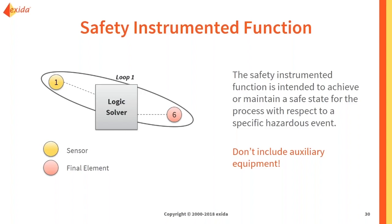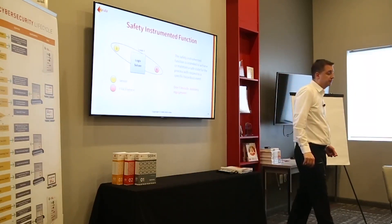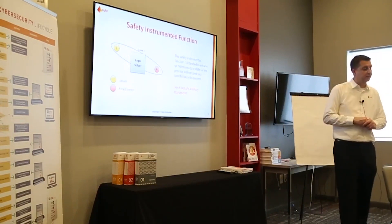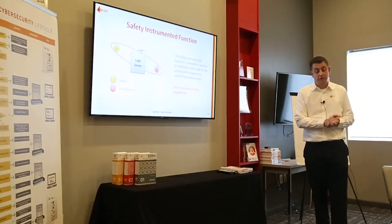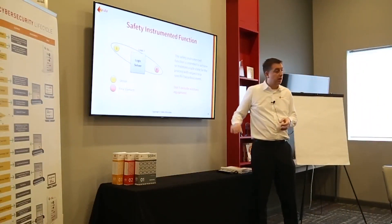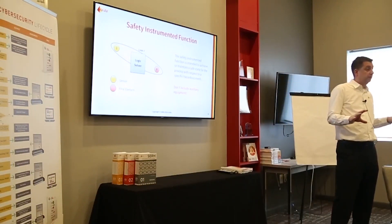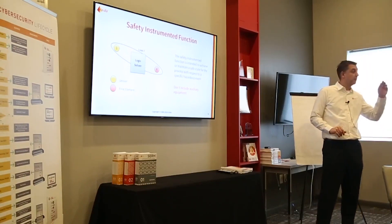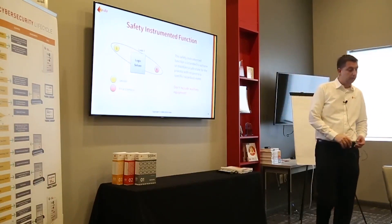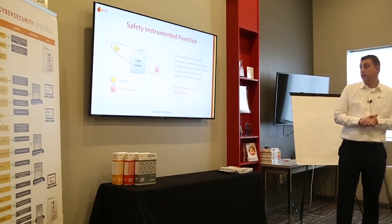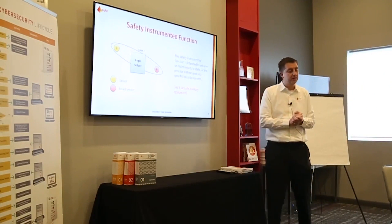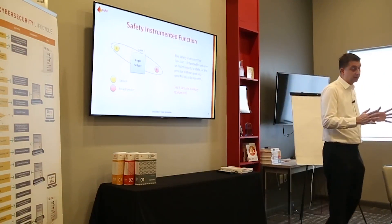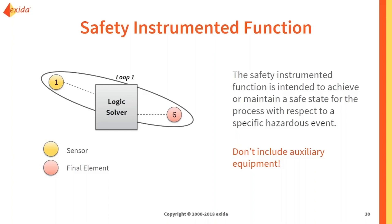For example, we detect pressure, and if pressure gets too high, we close an inlet valve. Sometimes there are extra activities we want to take once we try to achieve the safe state — such as sounding an alarm or shutting down an upstream process — but if those actions are not necessary to achieve the safe state, they are not part of our safety instrumented function. We always need to make sure we're not including auxiliary equipment.